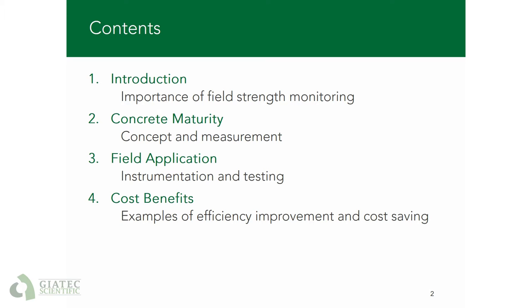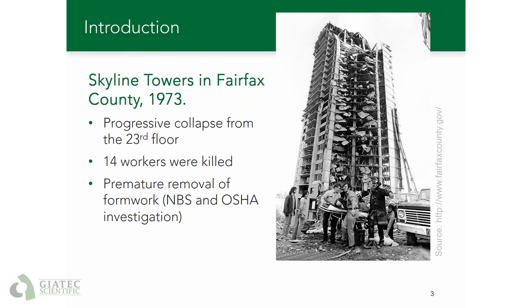So why is this topic important? Let's start with some historical background. Concrete structures could collapse for different reasons, but in the mid-70s there were two incidents where a lack of information on the in-place strength of concrete resulted in major collapses during construction. The first one was in 1973 where a progressive collapse killed 14 workers. The investigation by the National Bureau of Standards and OSHA concluded that the removal of formwork before concrete was strong enough led to this incident.